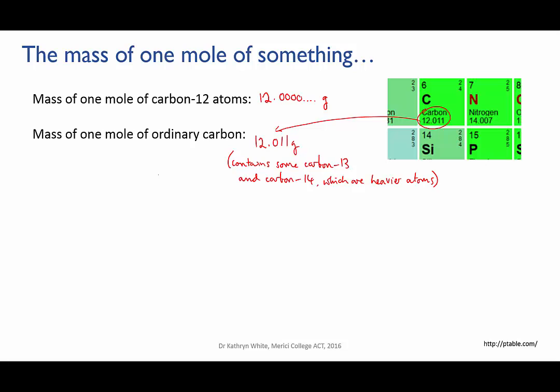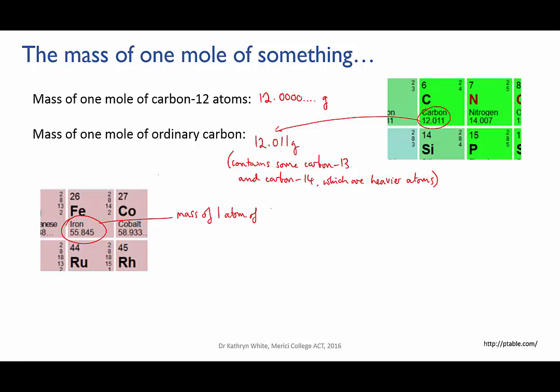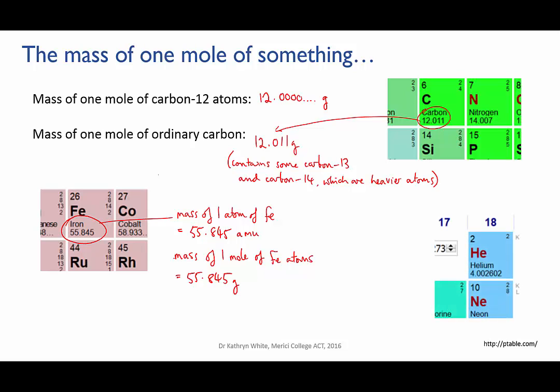So for instance, the average atomic weight of iron is 55.85 atomic mass units, and the mass of one mole of iron atoms is 55.85 grams. The average atomic weight of a helium atom is 4.003 atomic mass units, and the mass of one mole of helium, 6.022 times 10^23 helium atoms, is 4.003 grams.